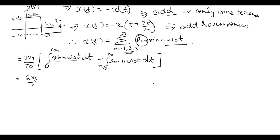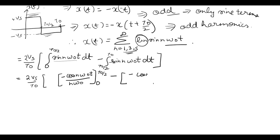After integration we get 2Vs upon T0, times minus cos(nω₀t) upon nω₀, evaluated from 0 to T0 by 2, minus minus cos(nω₀t) upon nω₀, evaluated from T0 by 2 to T0. Taking nω₀ common gives 2Vs upon T0 nω₀.